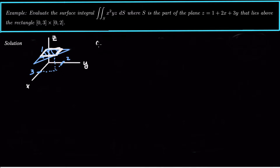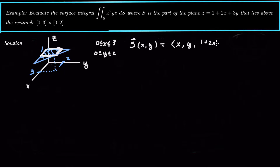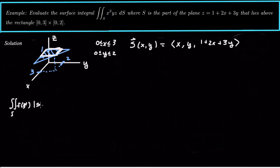So x is between 0 and 3 and y is between 0 and 2. The first thing we want to do is parameterize our surface, and really our plane is already a function of x and y. So let's just let x and y be our parameters. The parameterization is going to be x, y, and then 1 plus 2x plus 3y. When we take a surface integral of a scalar function, we take the function evaluated at the parameterization times the magnitude of sx cross sy. So the scalar surface integral formula is f of s times the magnitude of sx cross sy.